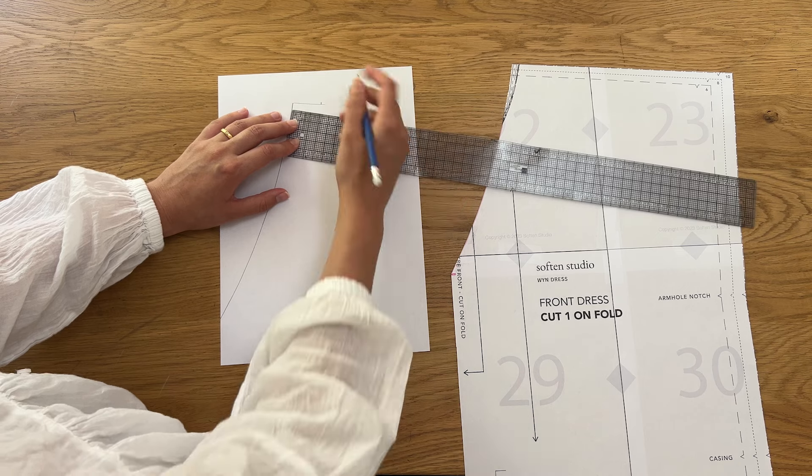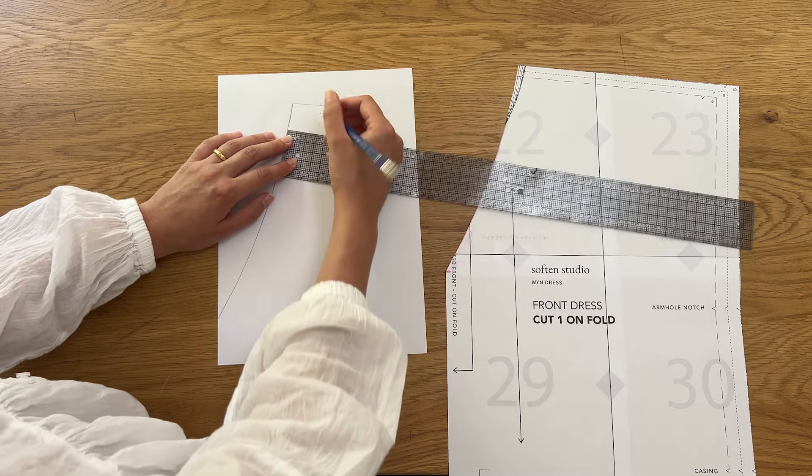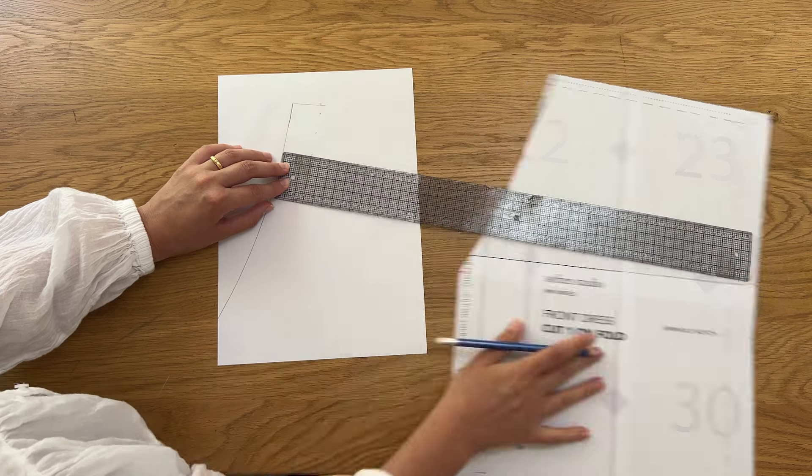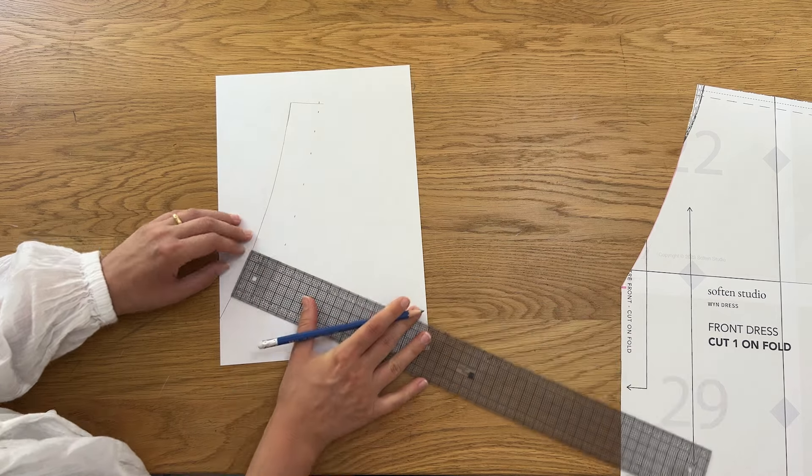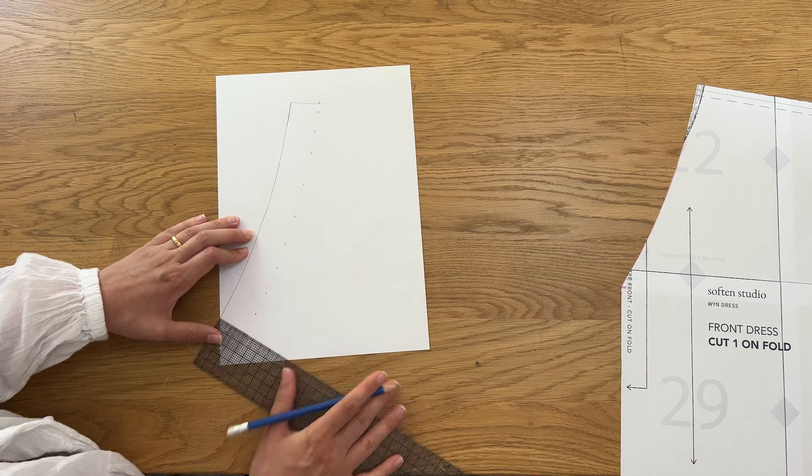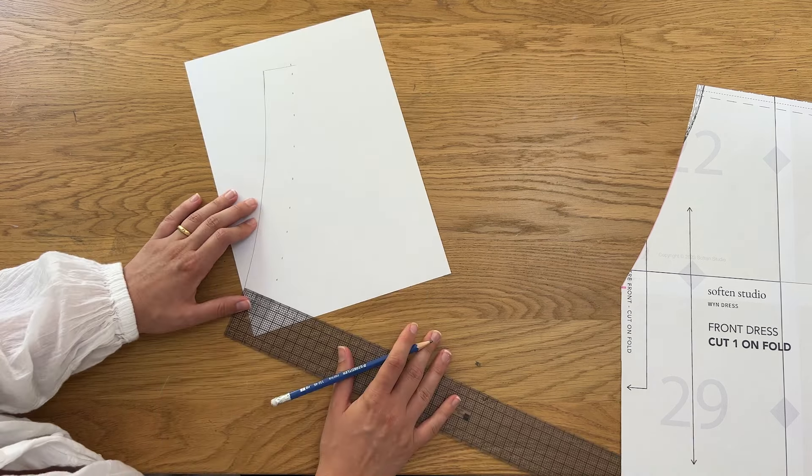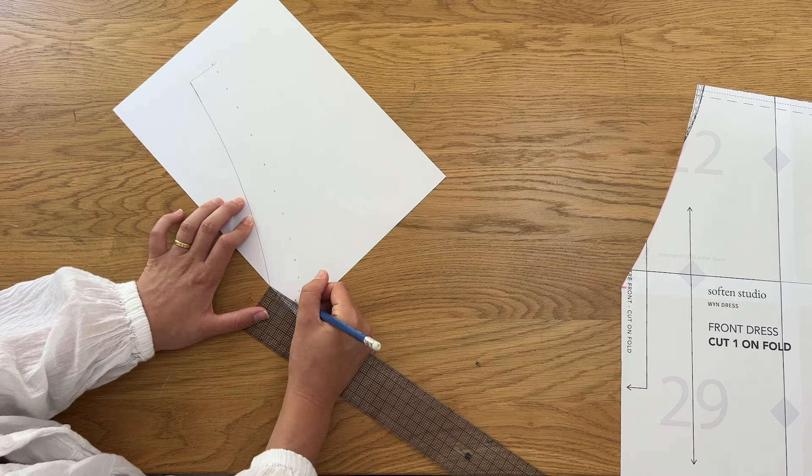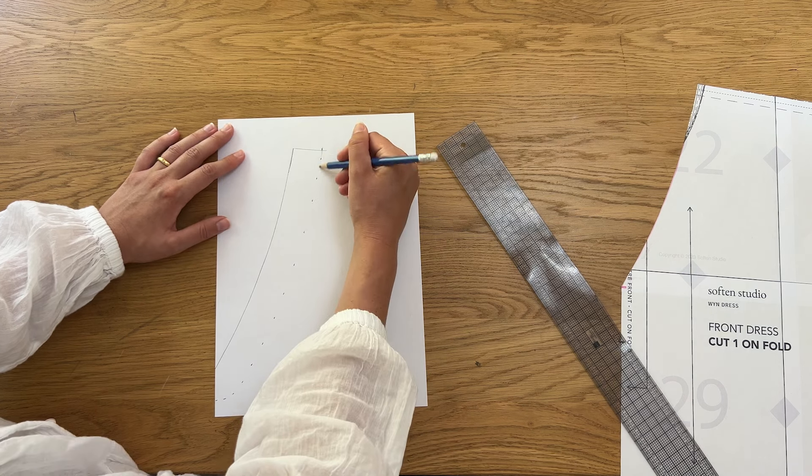Measure out three centimeters from the neckline edge and make a mark as you measure. Join these marks to create your facing piece.